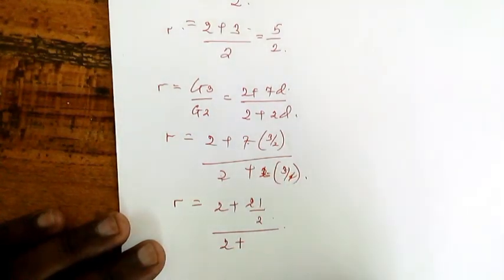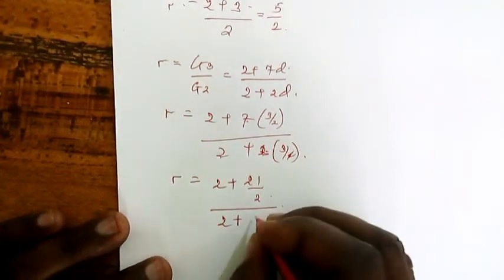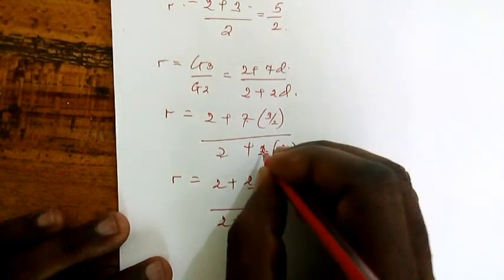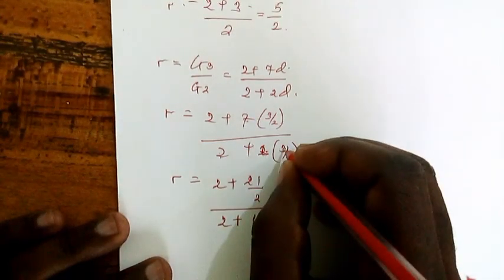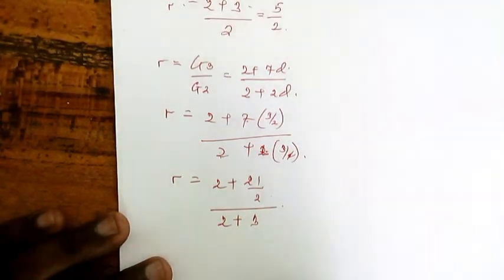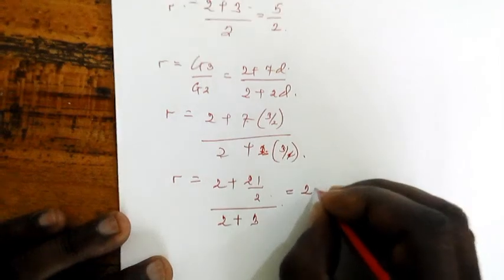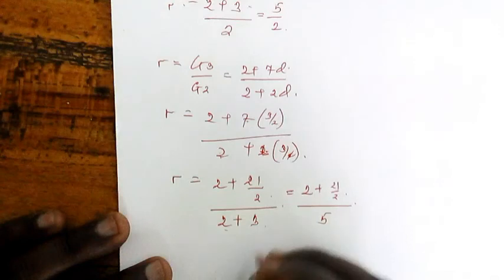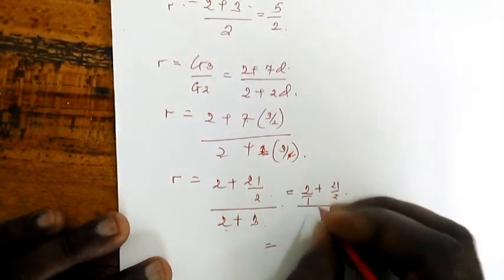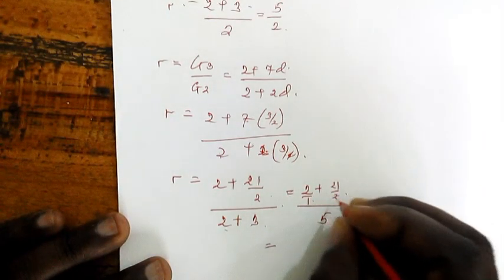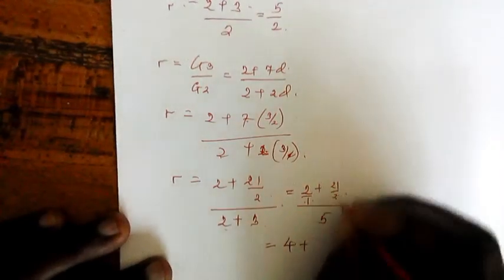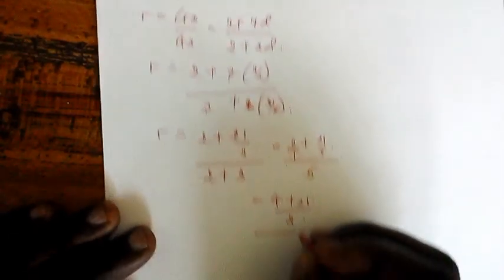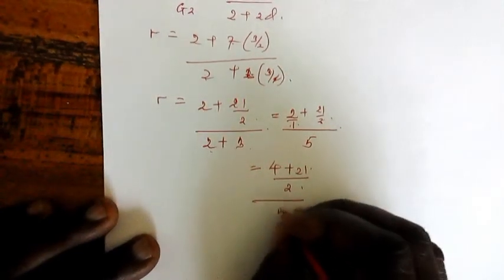But G3 we found was 2 plus 7D over G2, which is 2 plus 2D. Where there's common difference, we write its value, 3 over 2. It becomes 2 plus 7 times 3 over 2, over 2 plus 2 times 3 over 2. These cancel. You get R equals 2 plus 21 over 2, over 5. When you find the LCM here, you get 25 over 10. Once you simplify by 5, you get 5 over 2.